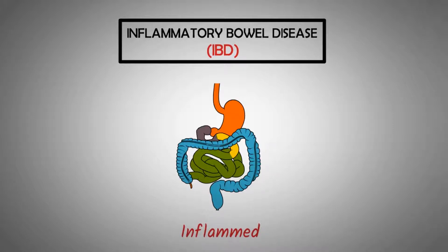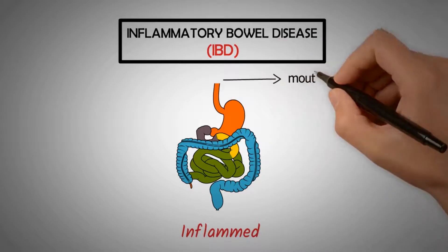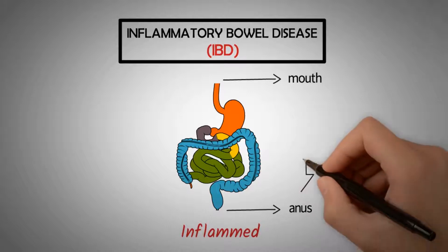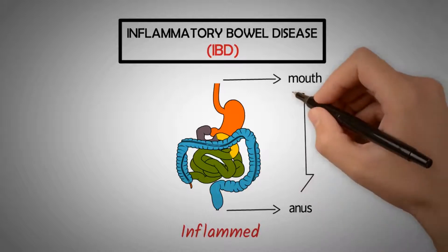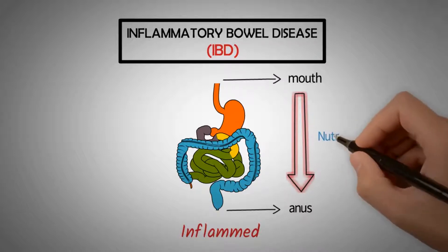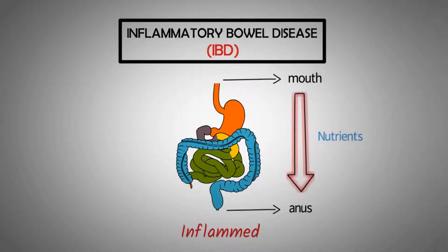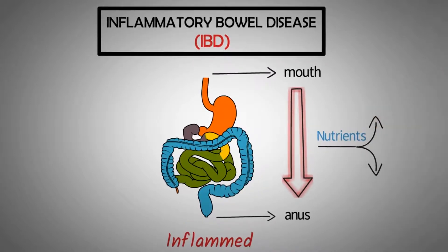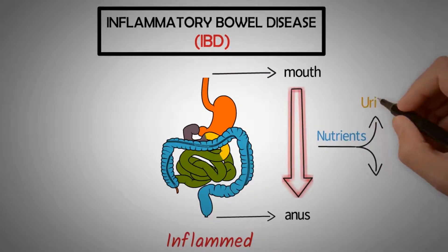Your digestive system runs from your mouth to your anus. If your digestive system is healthy, food moves smoothly through your digestive system and out of your body. Your body absorbs the nutrients it needs from the food, and the rest passes through your body and leaves as urine or stool.